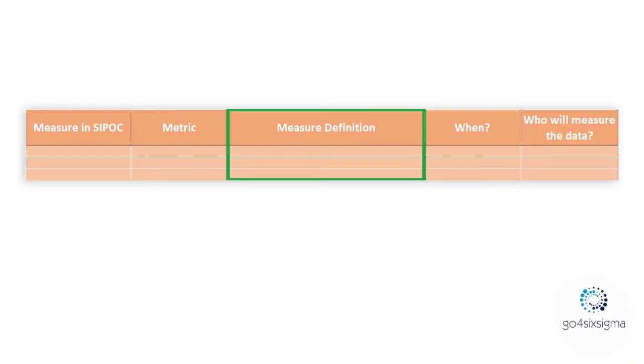The next column is the measure definition, which provides more detailed information about what you are going to measure. For example, if the metric is time spent per one pizza preparation, the measure definition would be: how much time is spent to prepare one pizza in restaurant A during a specific period — for example, in January. Be very specific in your measure definition so you are certain what kind of data you are looking for.